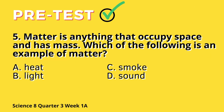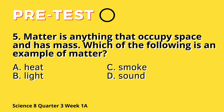Question 5: Matter is anything that occupies space and has mass. Which of the following is an example of matter? A. Heat. B. Light. C. Smoke. D. Sound.